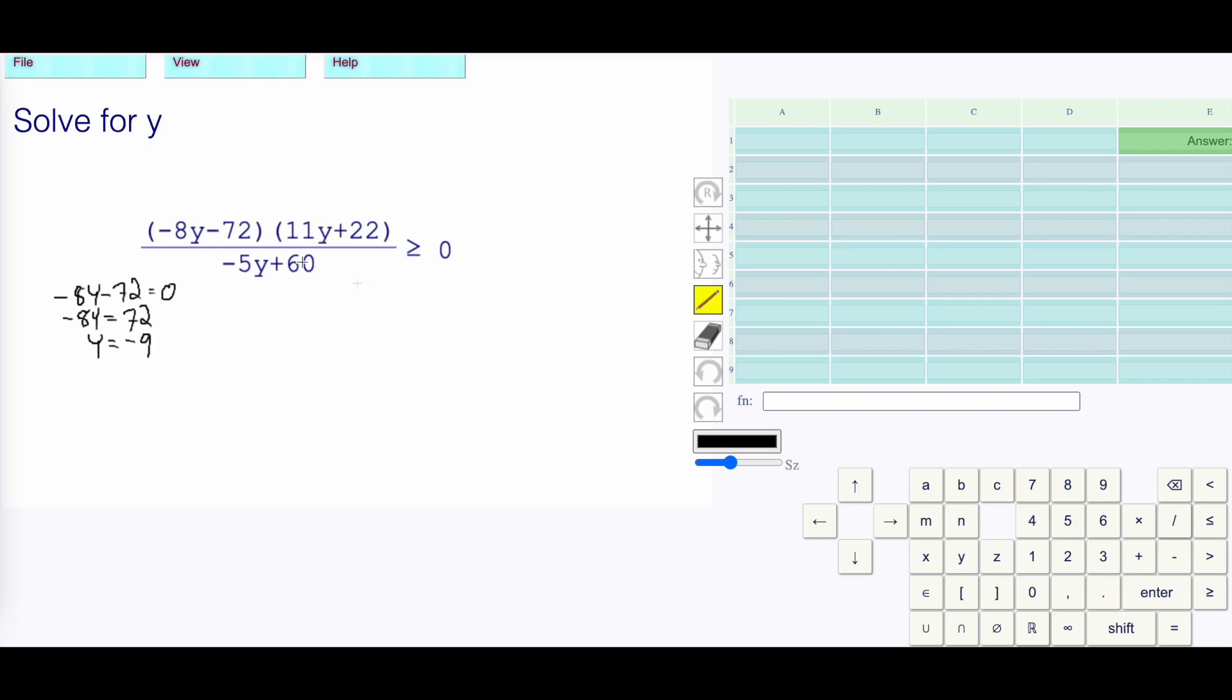For the 11y+22, we get 11y+22 equals 0. Subtract 22 from both sides. We have 11y is equal to -22. Divide both sides by 11, y is equal to -2.